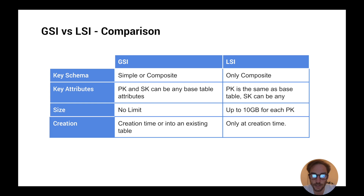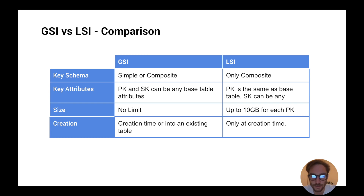The local secondary index can only have a composite key, because it has the same partition key as the base table but a different sort key. As for key attributes, on the global index the partition and sort key can be any attributes of the base table, whereas on the local one the partition key must be the same as the base table. The global index has no size limit, but the local one has a limit of 10 gigabytes per partition key, per item collection. An item collection is a collection of items with the same partition key.